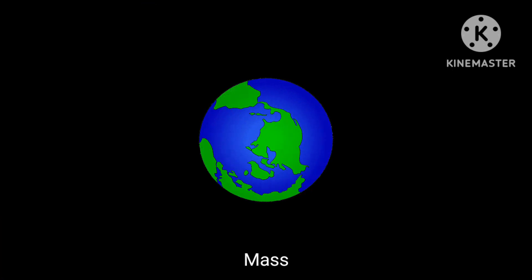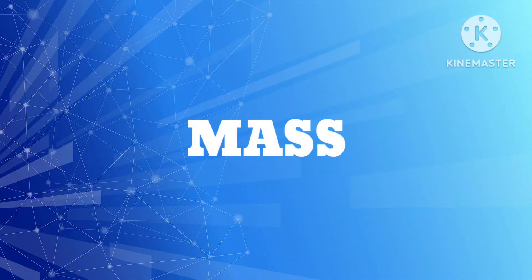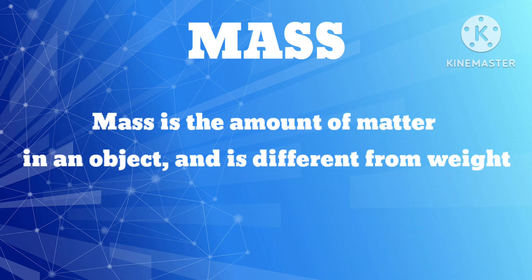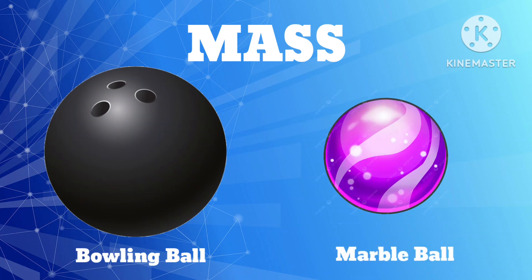Anything that has mass also has gravity. Earth's gravity comes from all its mass. Mass is the amount of matter in an object and is different from weight. You can compare the masses of two objects by looking at how big they are. For example, a bowling ball has more mass than a marble ball because it's larger.